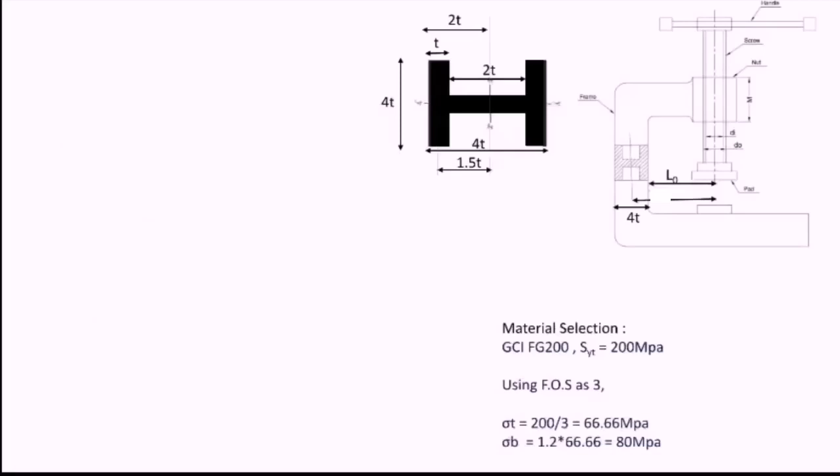The last part to be designed is the body. From the figure, we can see that the frame of the body is subjected to two stresses. First is bending stress and second is direct stress or compressive stress. Let us take each of them one by one.